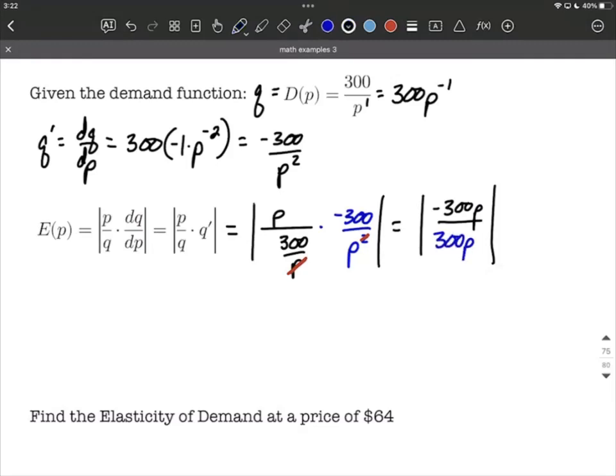What other reducing can we do? We could say negative 300 over 300, the 300s cancel out, we're left with negative 1, and P over P, those cancel out. So we're left with the absolute value of negative 1, which when we simplify that absolute value down, we get positive 1. That's the elasticity of demand function for this particular demand function.